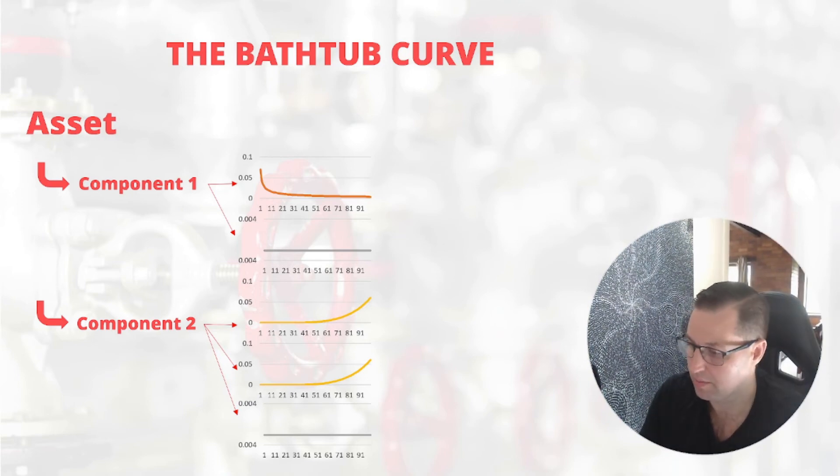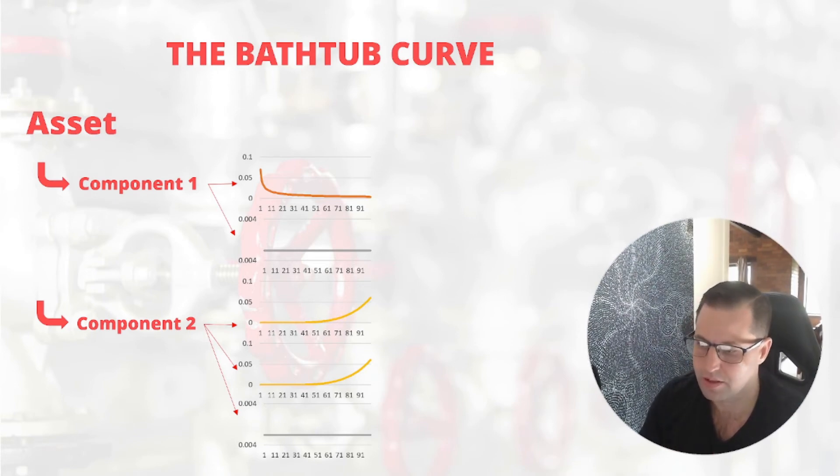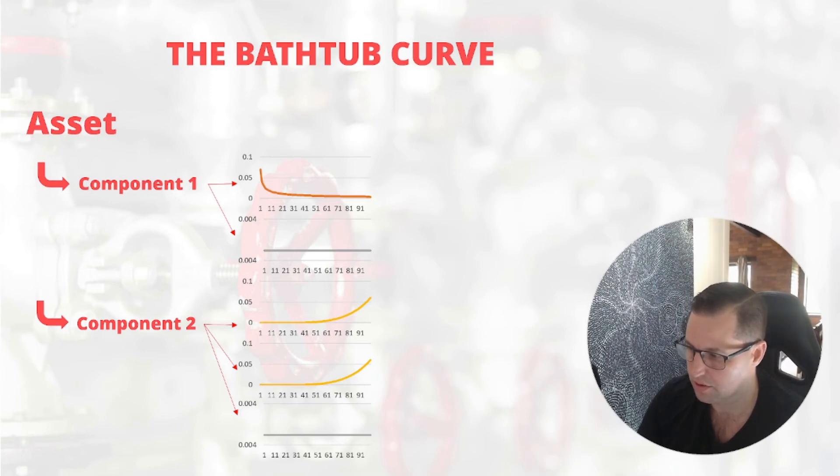Similarly, component number two would have the random piece and multiple wearout or end of life modes, and they would aggregate up to component level two.